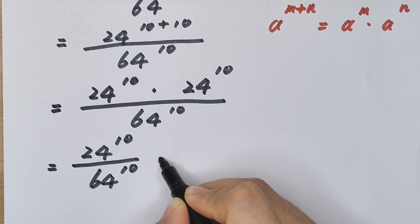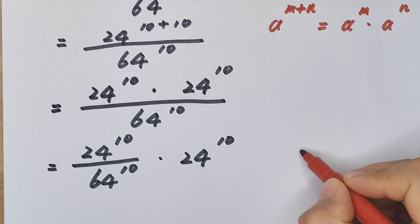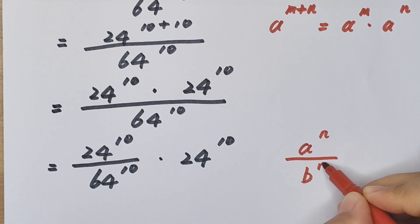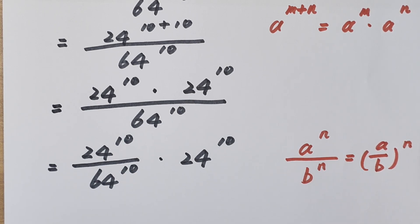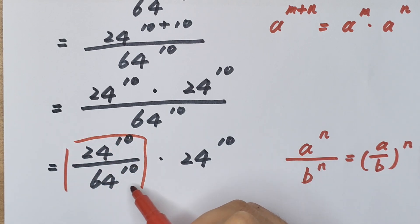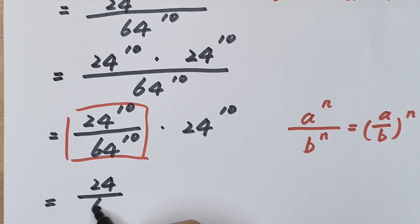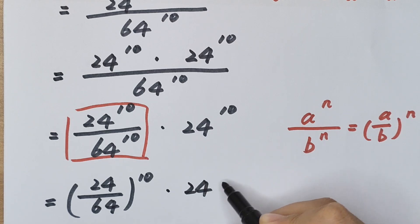This equals 24 to the power of 10 over 64 to the power of 10, times 24 to the power of 10. We know that a to the power of m divided by b to the power of m equals a divided by b, all in brackets, to the power of m. So this part can be written as 24 divided by 64, in brackets, to the power of 10, then times 24 to the power of 10.